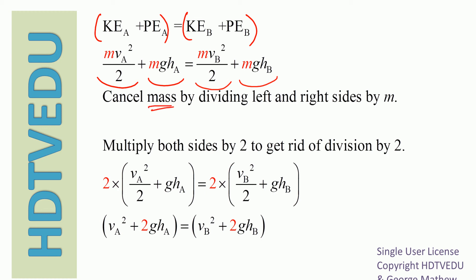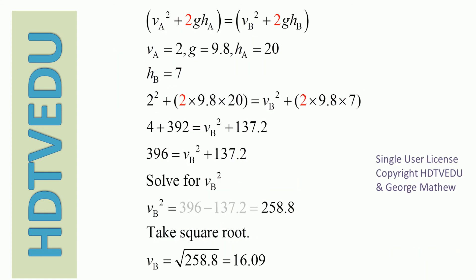Cancel mass by dividing both sides by m, then multiply both sides by 2, and we get: speed at A squared plus 2g·h_A equals speed at B squared plus 2g·h_B. Speed at A is 2 m/s, g is 9.8 m/s², height of point A is 20 m, height of point B is 7 m. Substitute: 2 squared plus 2 times 9.8 times 20 equals speed at B squared plus 2 times 9.8 times 7.